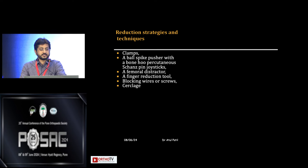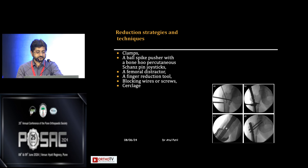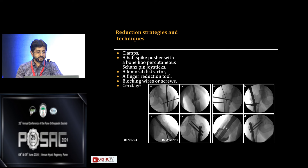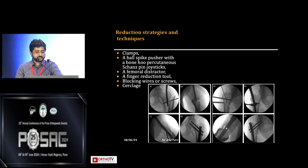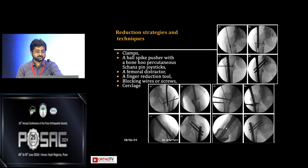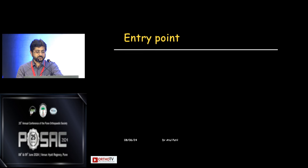What are the reduction strategies and techniques you can use for subtrochanteric fractures? These include clamps, ball spikes, pushers, a femoral distractor, finger reduction tools, blocking wires and screws, and cerclage wire. All of these tools may be needed during subtrochanteric fracture fixation.